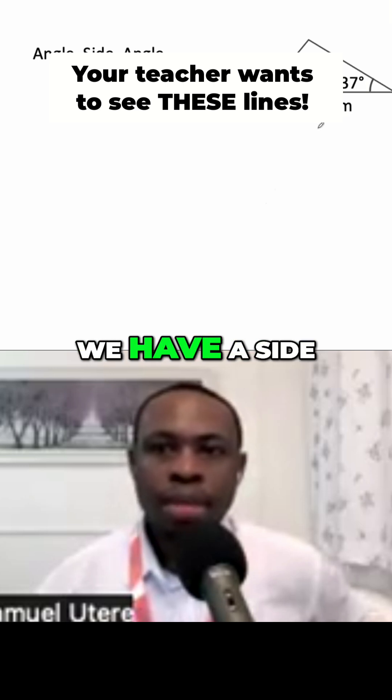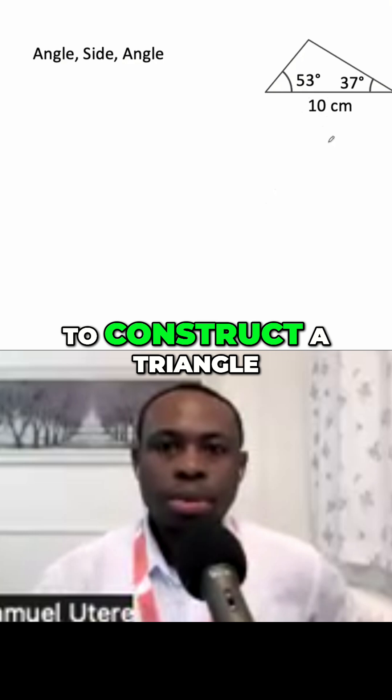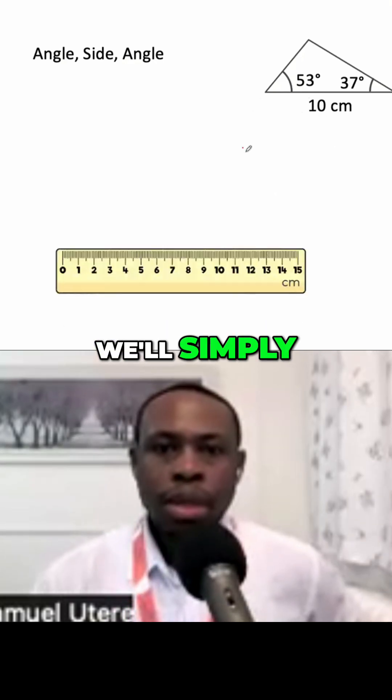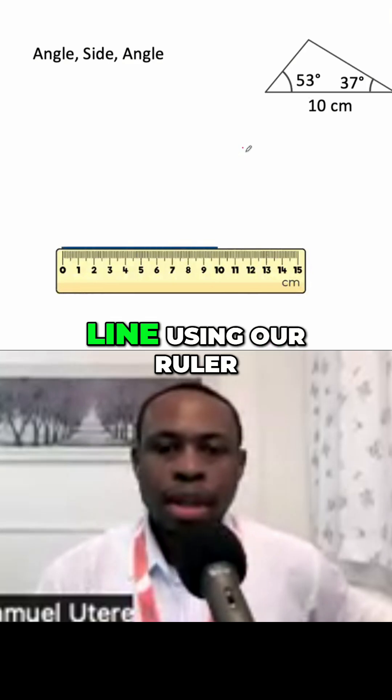You can see we have an angle, we have a side between the two angles. Now to construct a triangle like this, we'll simply first draw a 10cm line using our ruler.